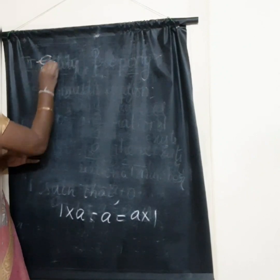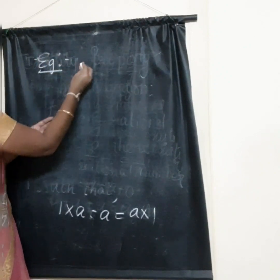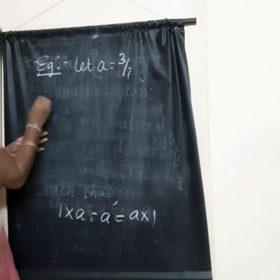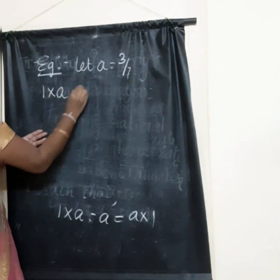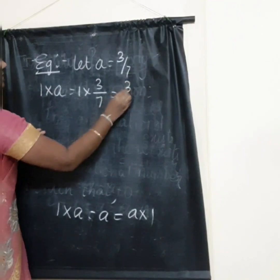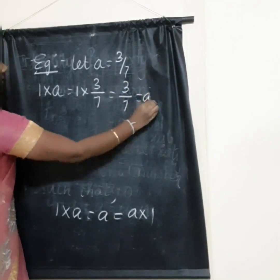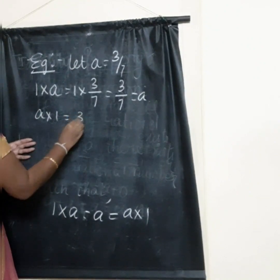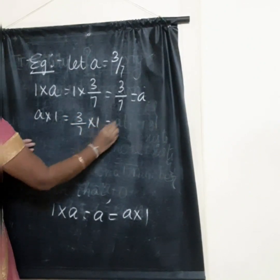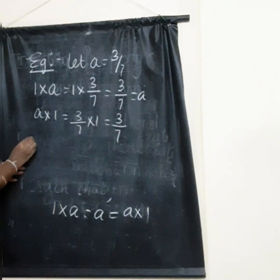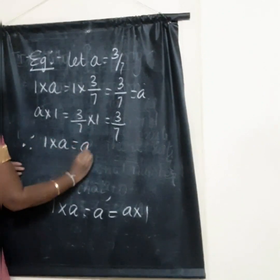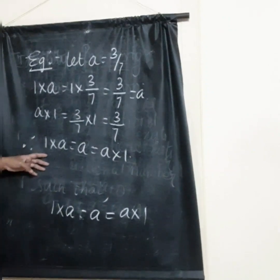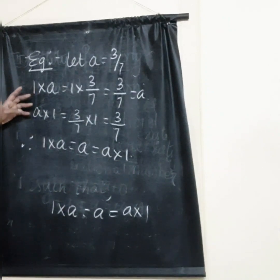Example: taking A equal to 3 by 7. What is 1 into A? It is 1 into 3 by 7, which is 3 by 7 — that is A. And A into 1 is 3 by 7 into 1, which is also 3 by 7. Therefore, 1 into A is equal to A is equal to A into 1. So rational numbers satisfy the identity property for multiplication.